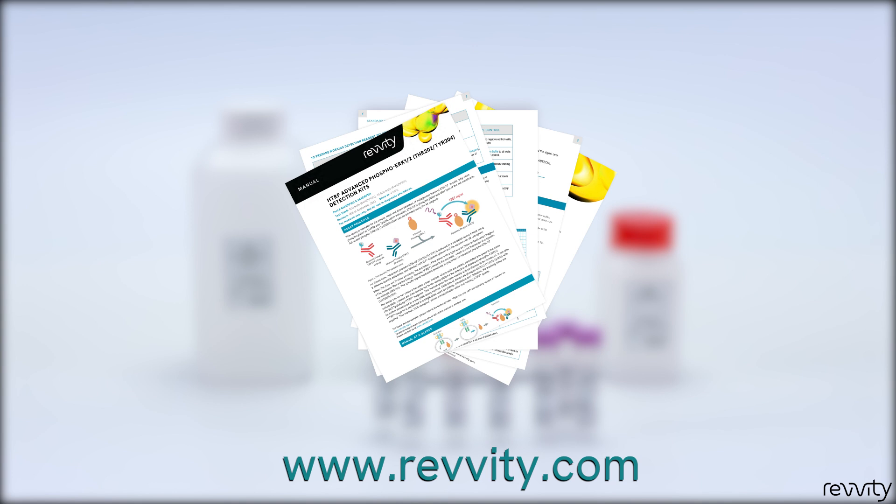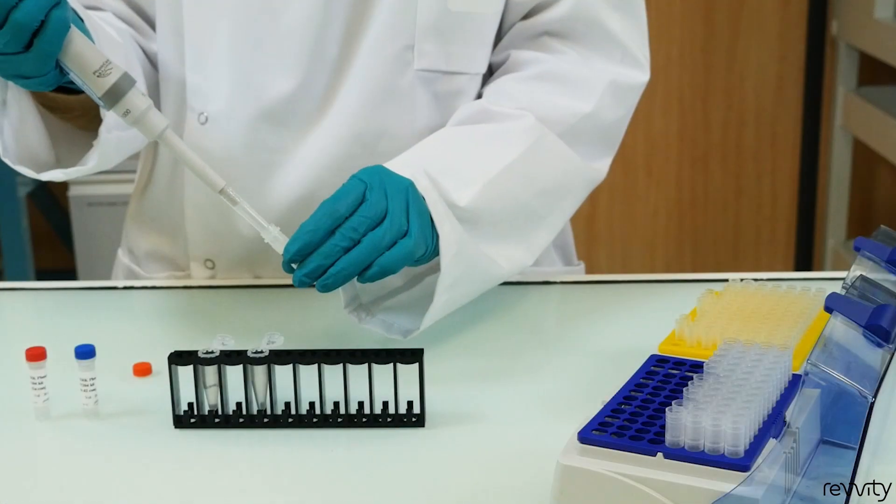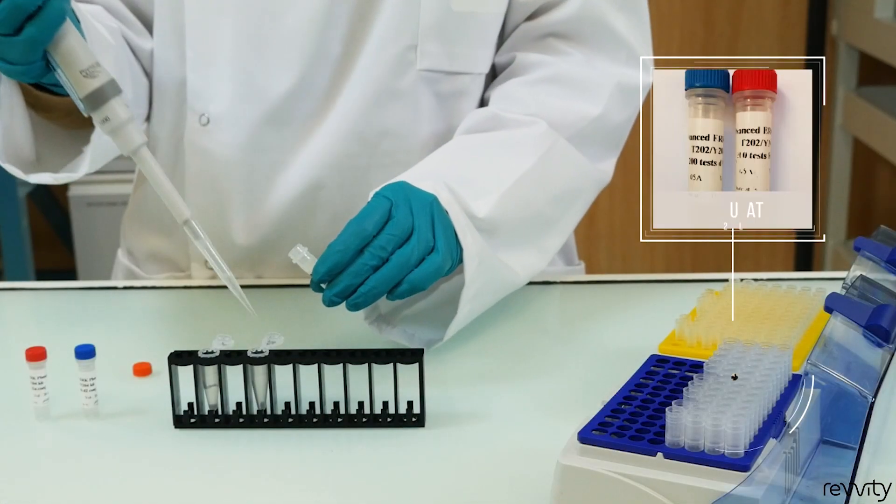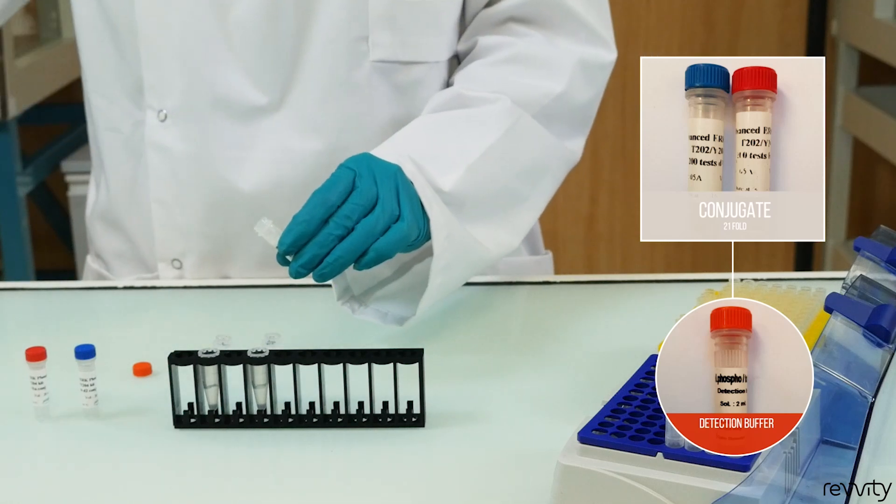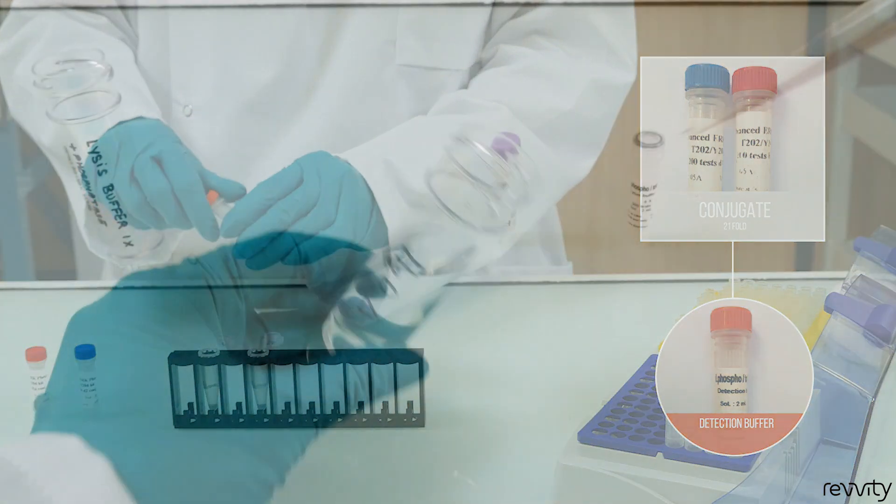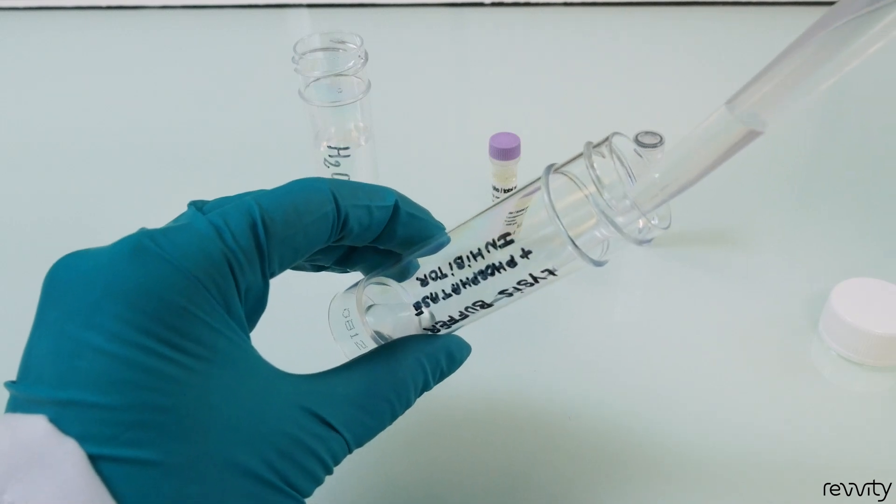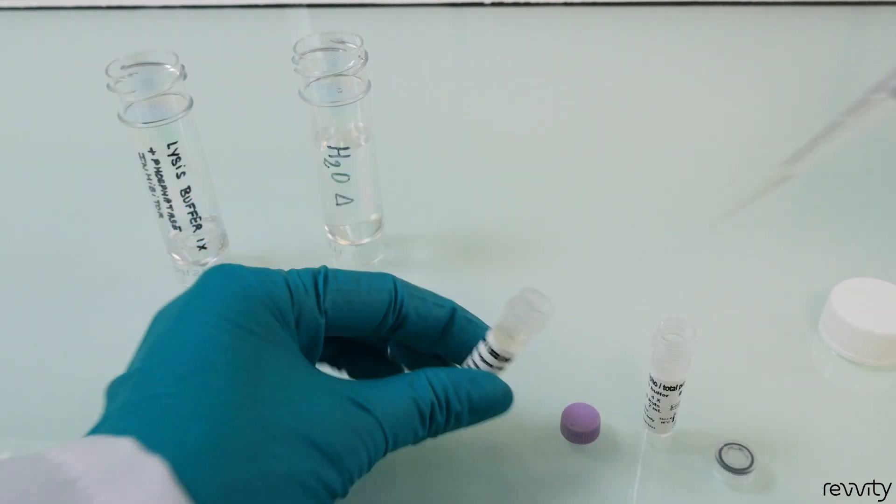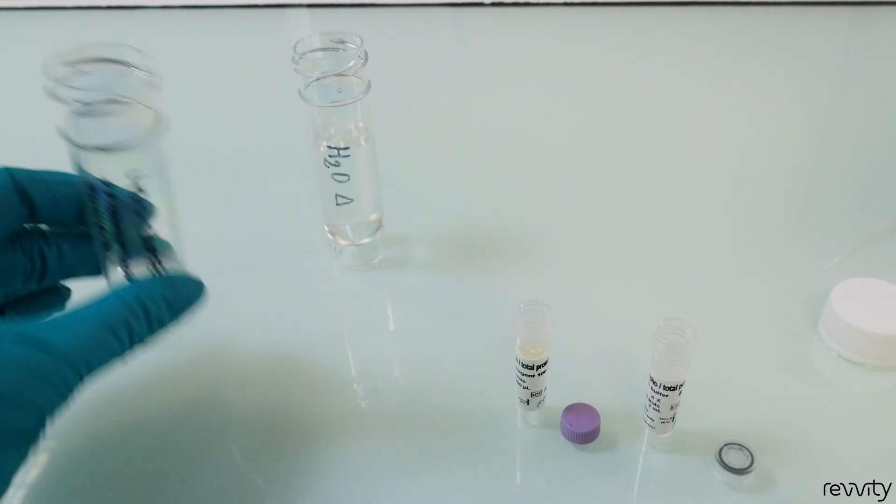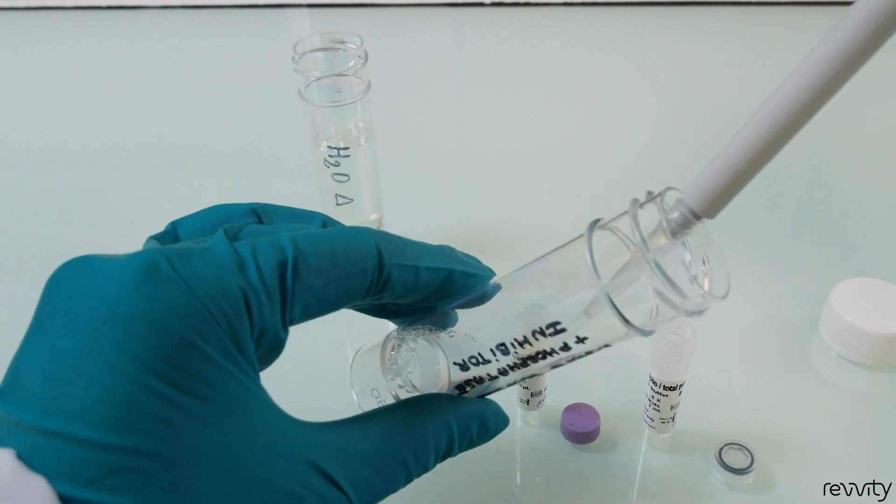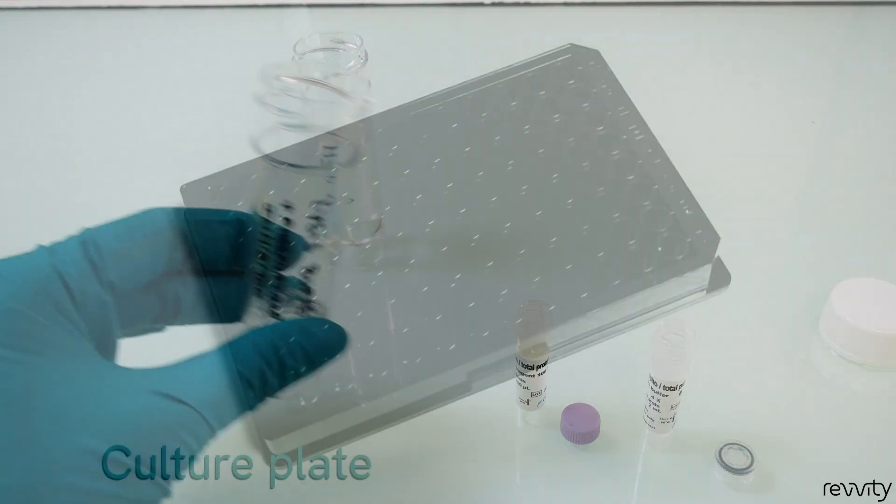Now let's look at the experiment step by step. First, reconstitute your conjugates just by diluting 21-fold the stock solution in the detection buffer provided in the kit. Prepare the 1X lysis buffer by diluting the 4X stock buffer in distilled water, then supplement it with phosphatase inhibitor. That's it! All reagents are ready to get your assay started.